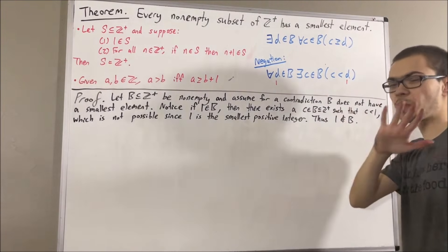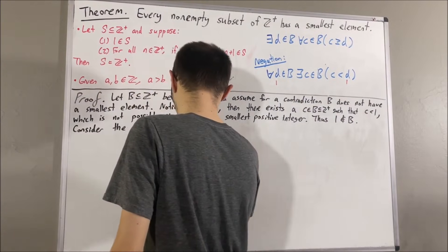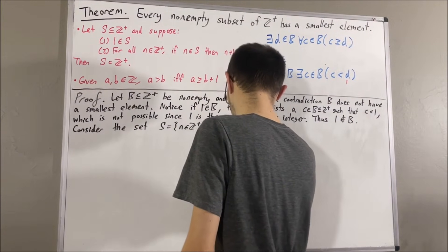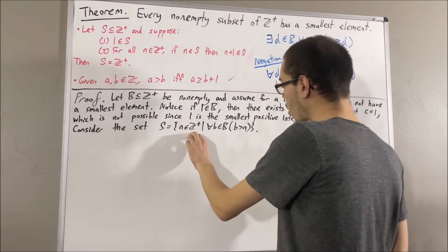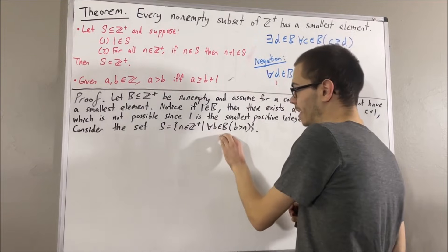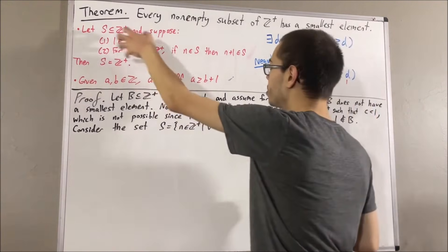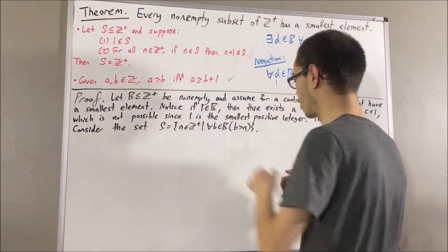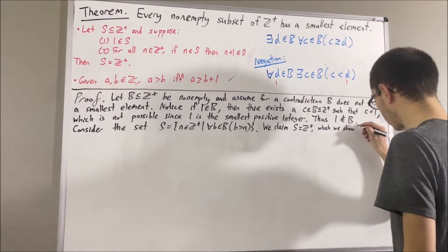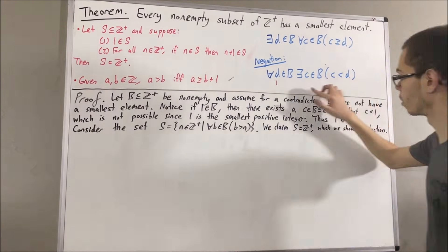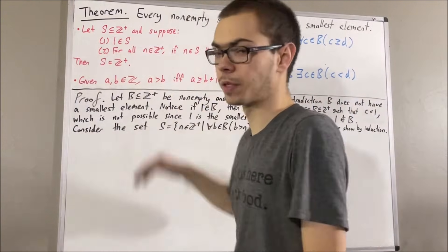So now we consider the following set. We consider the set S, which is the set of positive integers n with the property that every element of B is bigger than n. The claim is that we can use induction to show that S is equal to the set of positive integers. So let's start with the base case. In the base case, we're trying to show that 1 is an element of S.